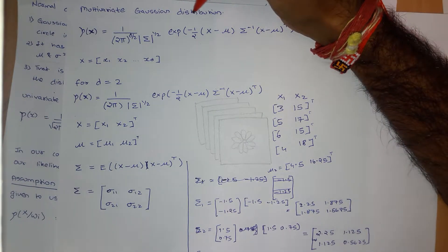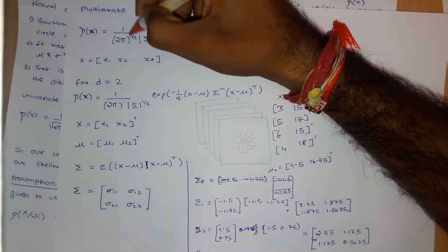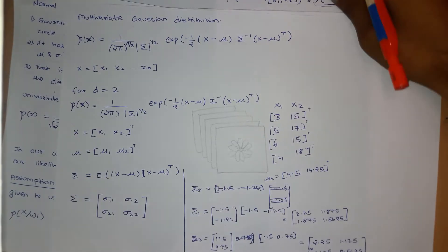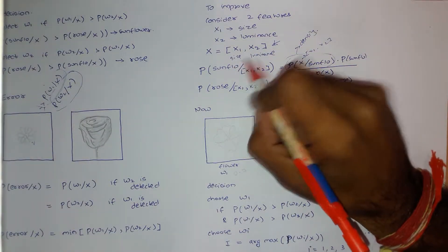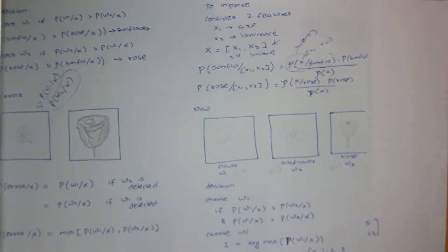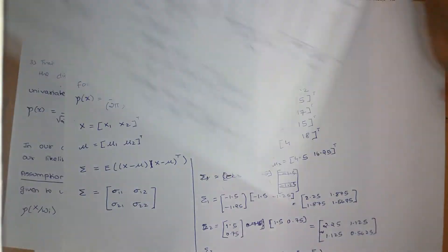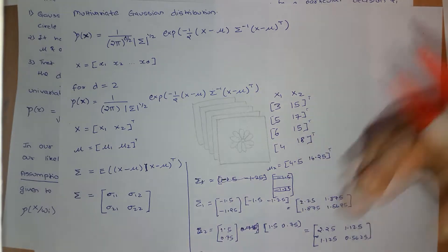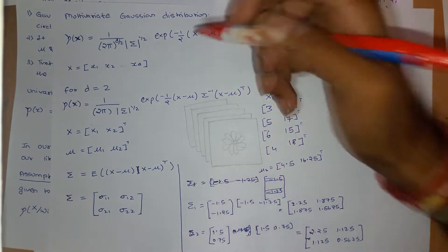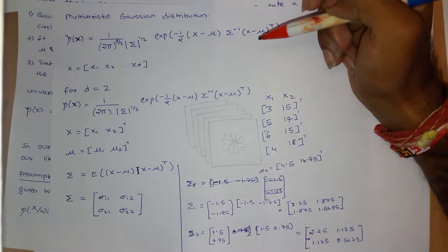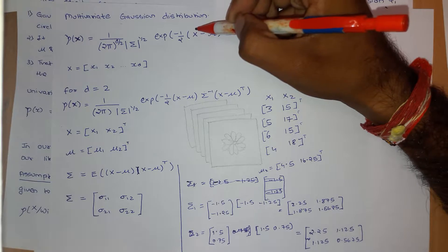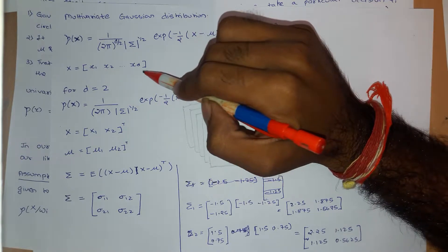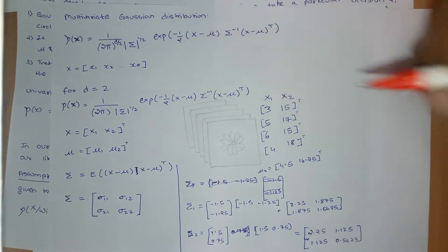In the multivariate Gaussian distribution, d tells you the dimension of the feature vector. In our previous case we had a two-dimensional feature vector — two features: size and luminance. So that will be called a two-dimensional feature vector. We are going to talk mainly about the bivariate Gaussian distribution, which is d equal to 2. In that case x will be a vector x1, x2, ..., xd — these can be different features.